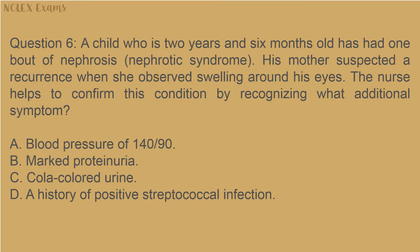Question 6: A child who is 2 years and 6 months old has had one bout of nephrosis (nephrotic syndrome). His mother suspected a recurrence when she observed swelling around his eyes. The nurse helps to confirm this condition by recognizing one additional symptom: A) blood pressure of 140/90; B) marked proteinuria; C) cola-colored urine; D) a history of positive streptococcal infection.